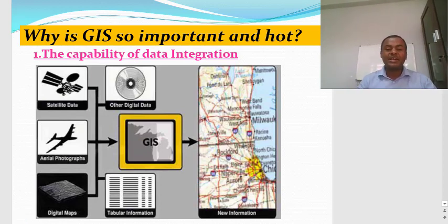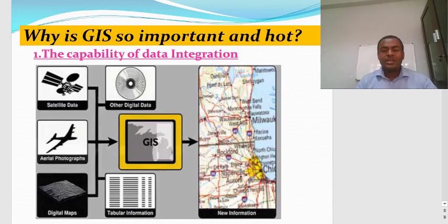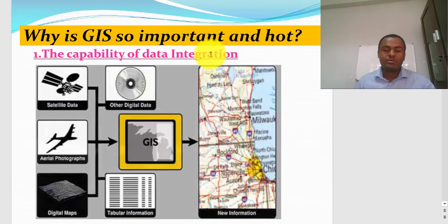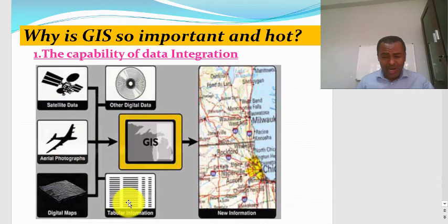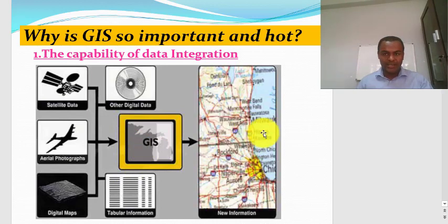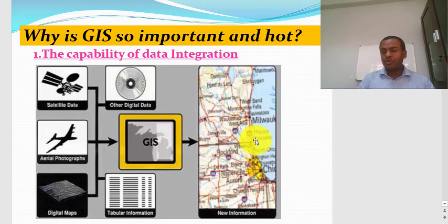Why is GIS so important? There are three main reasons. The first is the capability of GIS for data integration. As you can see from this picture, GIS integrates data from different sources — satellite data, digital data, aerial photographs, digital maps, and tabular data — and can produce exciting output. Because of this capability of data integration, GIS is so important these days.